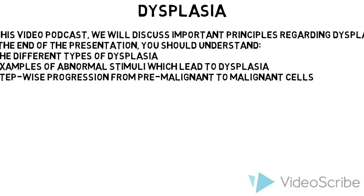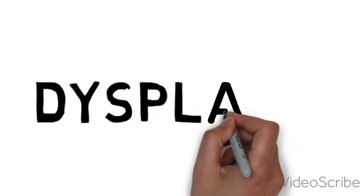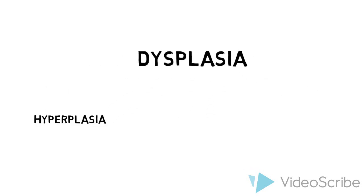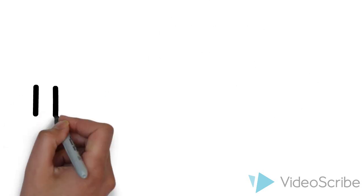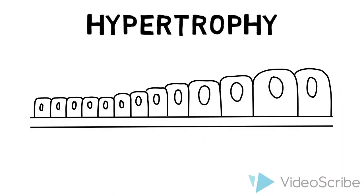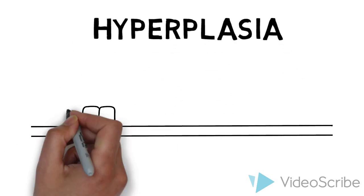Dysplasia is dysfunctional cell growth involving abnormal morphological changes. There are four ways cells can become dysplastic. Firstly, cells can grow large in size. This is called hypertrophy. Or they can grow large in number. This is called hyperplasia.